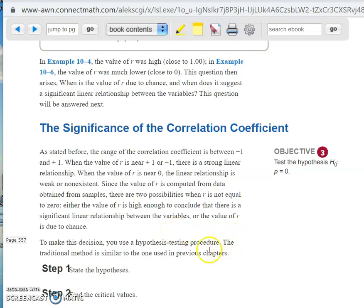This is chapter 10, section 10-1, recording number 2. All right, so we're going to talk about the significance of the correlation coefficient. And what he means by that is the statistical significance. Is it a statistically significant value?